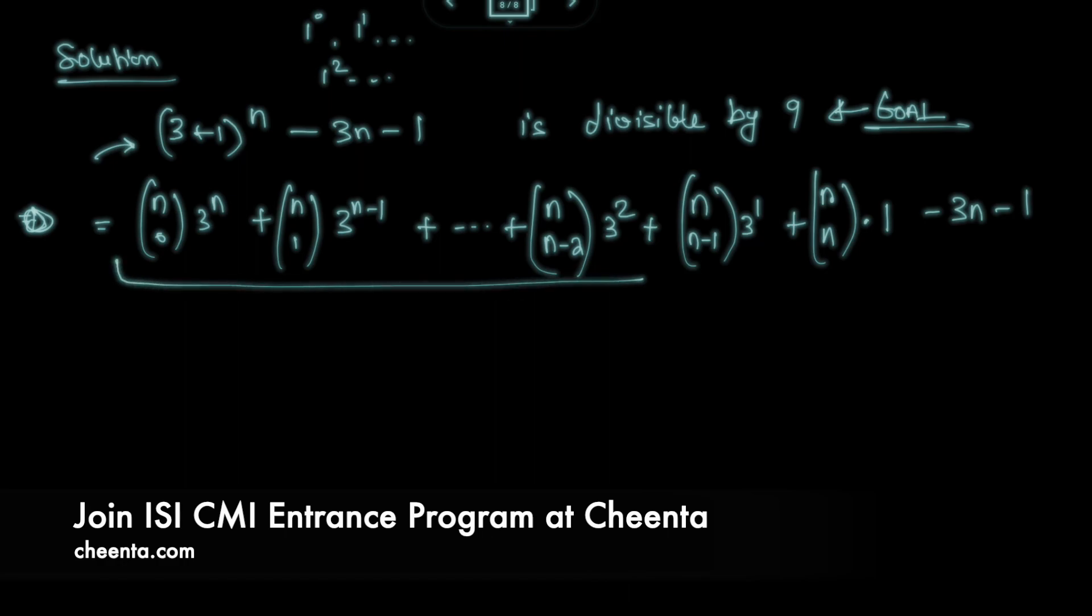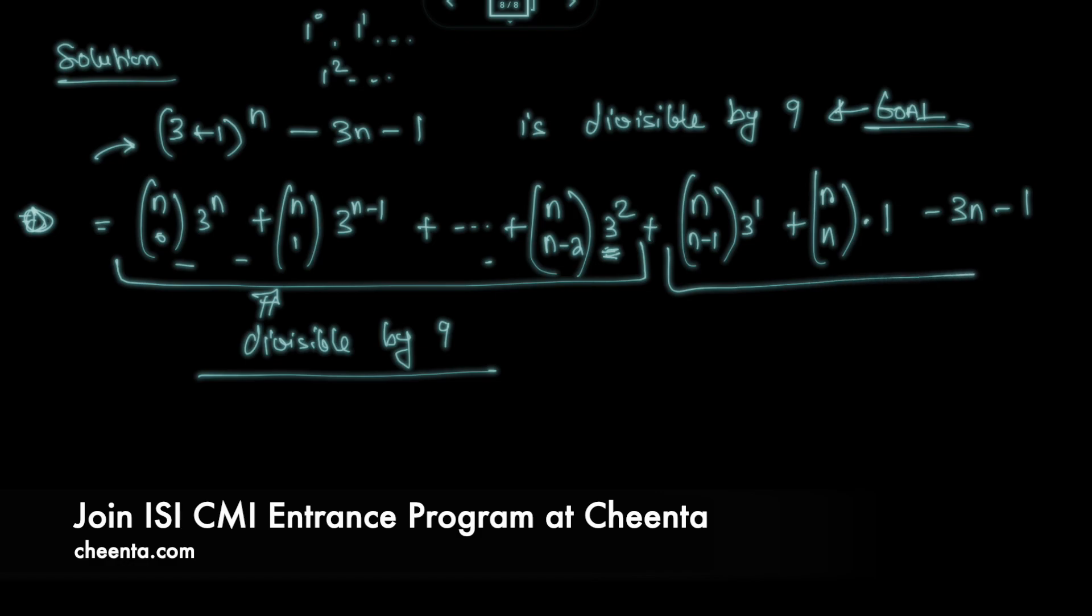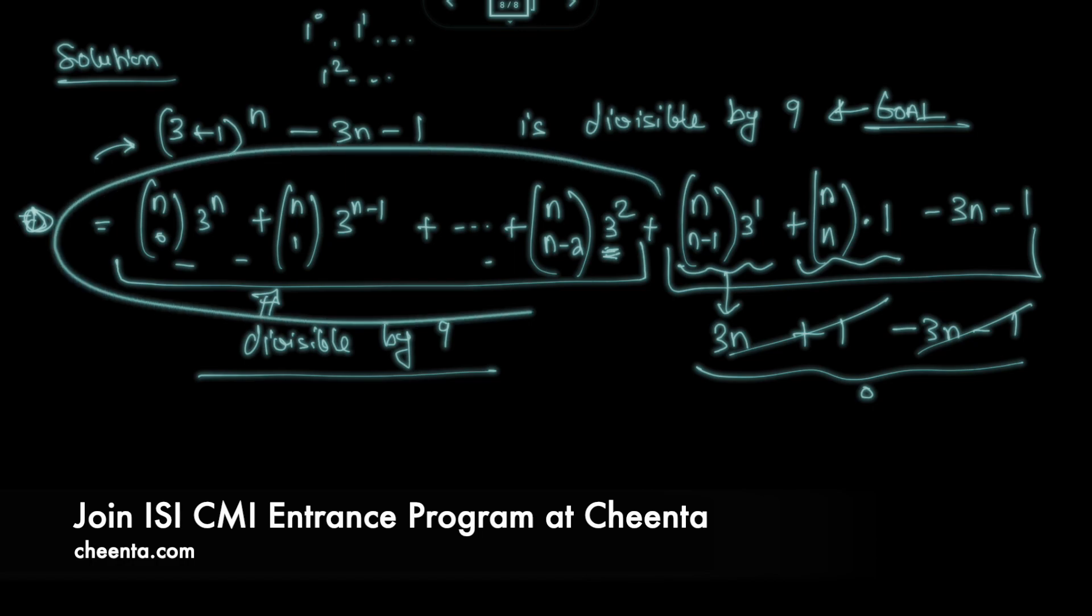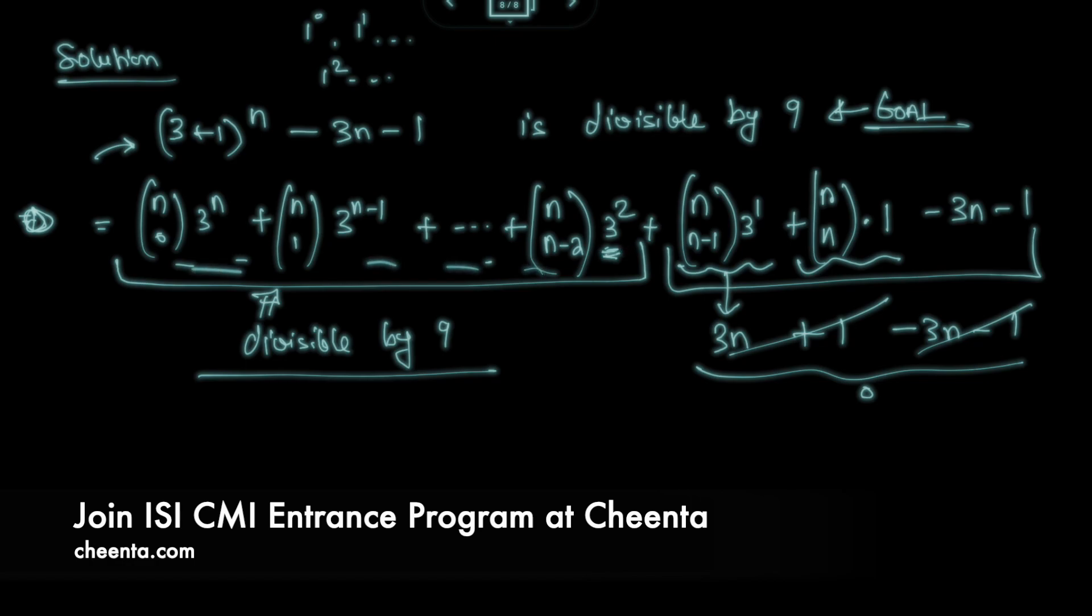Okay, notice that all of these terms are divisible by 9. Why? Because they contain at least two 3s. It's 3 squared, 3 cubed or more than that. What about this portion? Okay, so this particular quantity is 3n. This is simply 1 and from that you subtract 3n and you subtract 1. So this is 0. This portion is 0. So you don't have to worry about that portion. You just have to worry about this portion which is divisible by 9 because it starts from 3 squared and goes to even larger powers of 3.